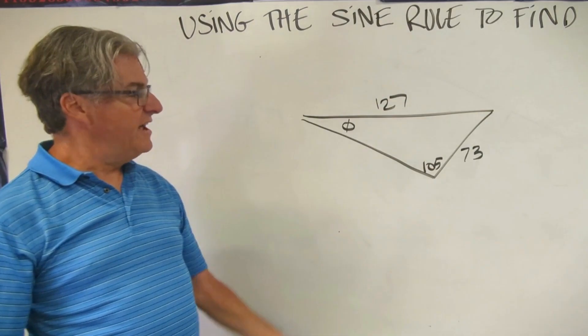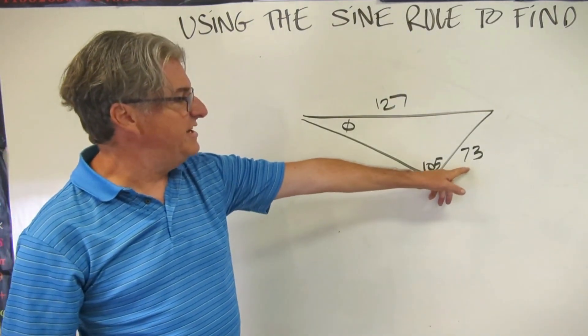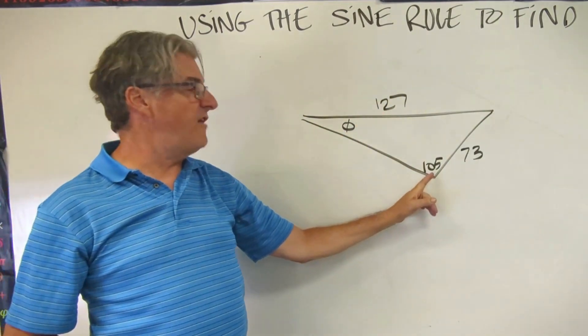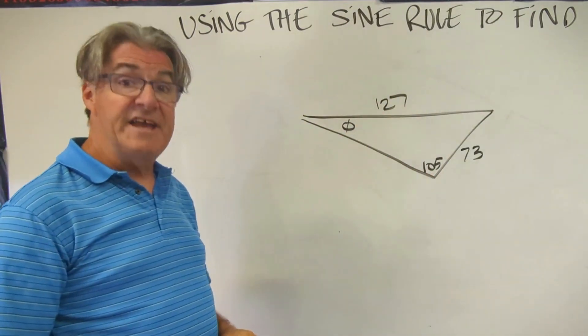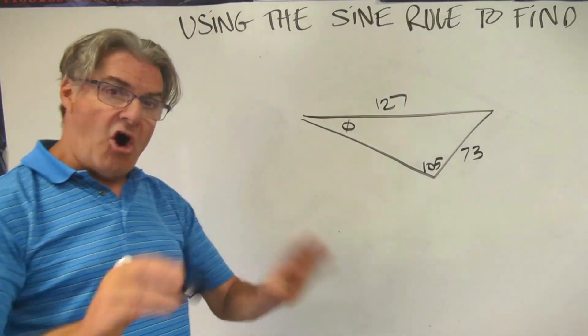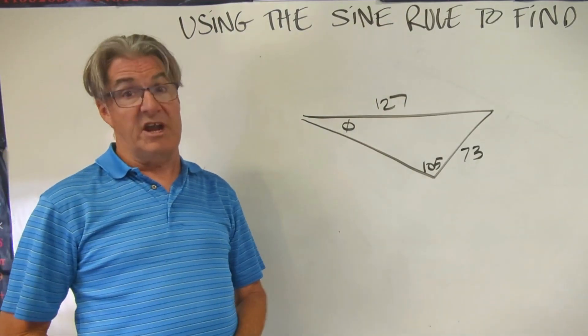Here's another one for you to try. I have a nice little triangle set up right here for you. You know this side is 73, that side is 127, this angle is 105, and your instruction is to find phi. So pause the video and do all the steps and see what you get for phi. Then come back and take a look at how I did it.